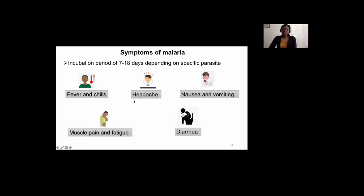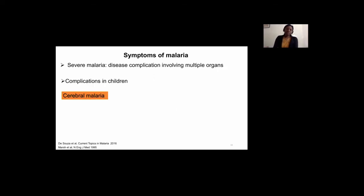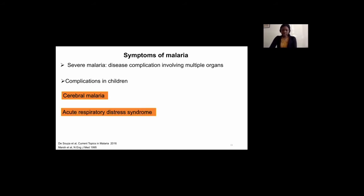The symptoms are usually mild, but if not treated, they can develop into severe disease, especially in the case of Plasmodium falciparum. Severe malaria usually involves multiple organs and is mostly observed in children less than five years of age in malaria endemic regions. The major complications that are observed are cerebral malaria, acute respiratory distress syndrome, and severe anemia.